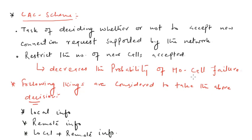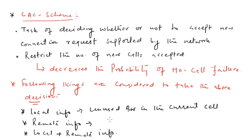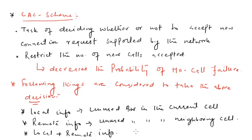Local information means the amount of unused bandwidth in the current cell. Since the mobile user is free to move anywhere, an admission control scheme that relies on local information only cannot guarantee the quality of service requirements of a connection throughout its lifetime. That's why we have to consider both local information as well as remote information. This is about the call admission control scheme and how it works to prioritize the handoff.